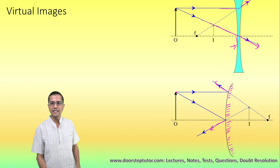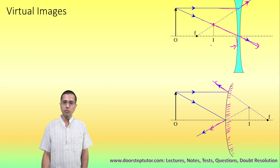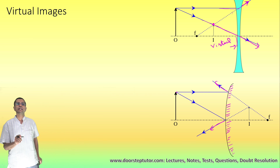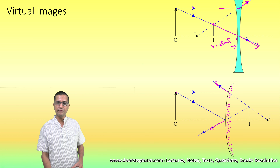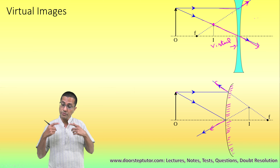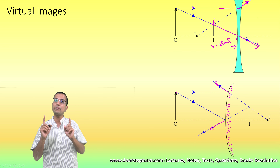But if we retrace the path of this divergence back using dotted lines, we get a point of intersection, and this is where virtual images are formed. Virtual images are formed when the photons do not really meet, but this is the point from which an observer with an eye would perceive the photons to be coming from.